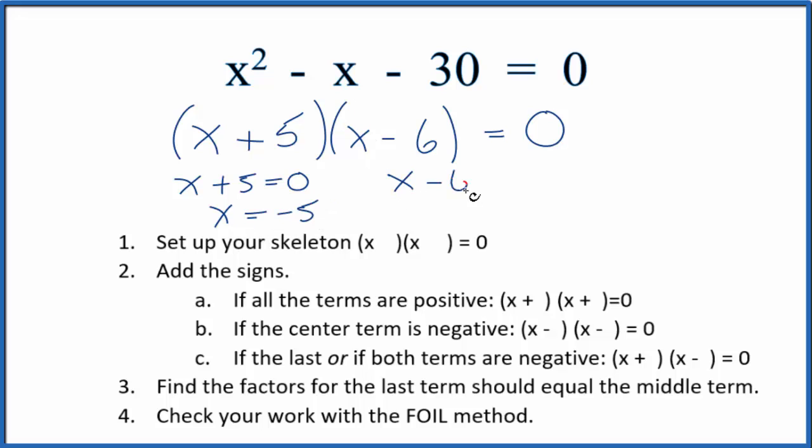Over here, x minus 6 equals 0. Add 6 to both sides. x equals 6.